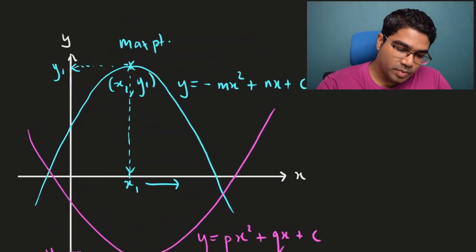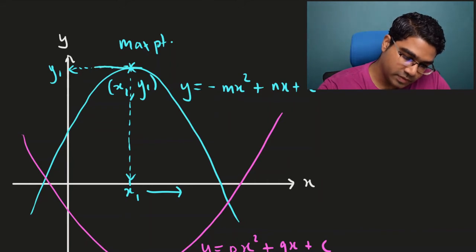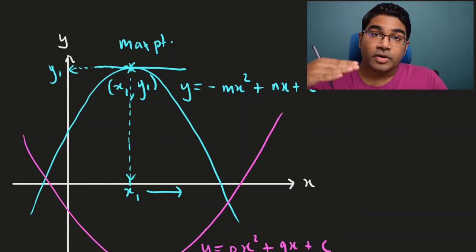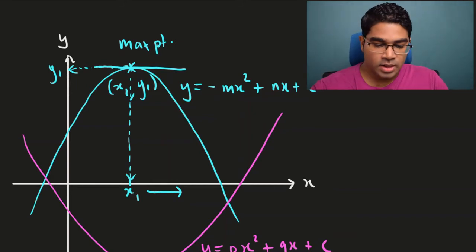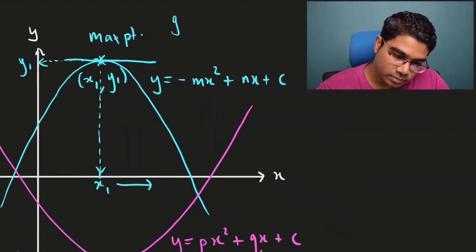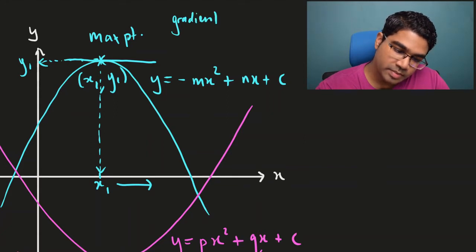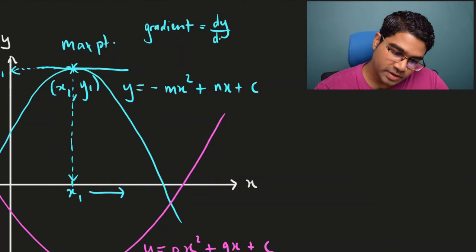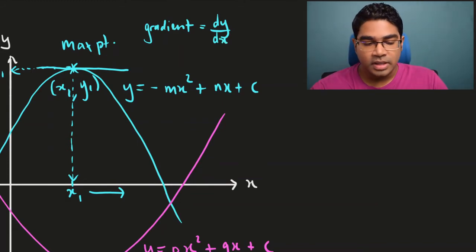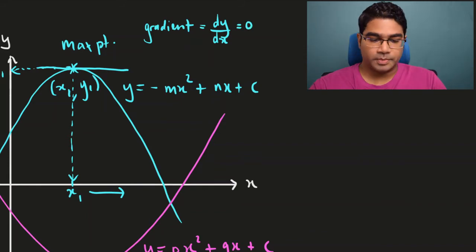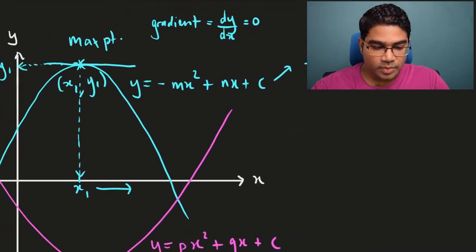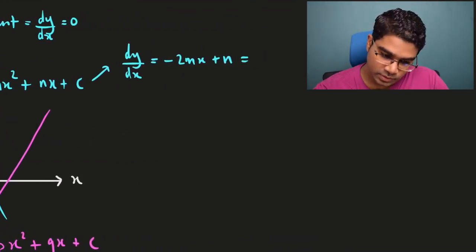At the maximum point, notice that the gradient of the tangent to the curve is a horizontal line, and the gradient of a horizontal line is 0. So at the maximum point, the gradient — which can be represented by the gradient function dy/dx — this is where the first derivative comes in. dy/dx is the first derivative and represents the gradient function of the curve. This gradient equals 0.